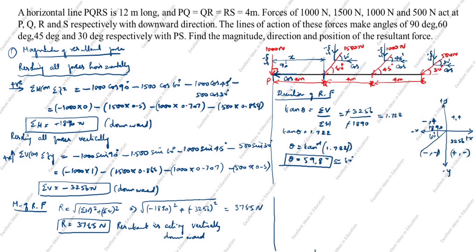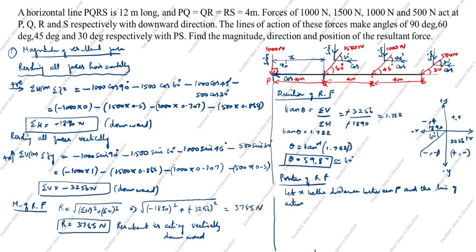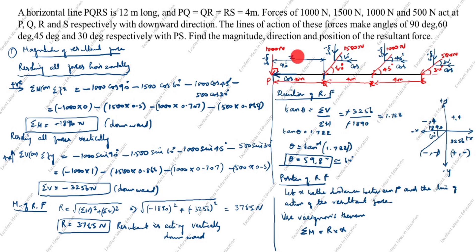Next, we calculate the position of the resultant force. Let X be the distance between P and the line of action of the resultant force. We will use Varignon's theorem, whose formula states: ΣM_P = R × X. We need to find ΣM_P — the sum of moments about point P.